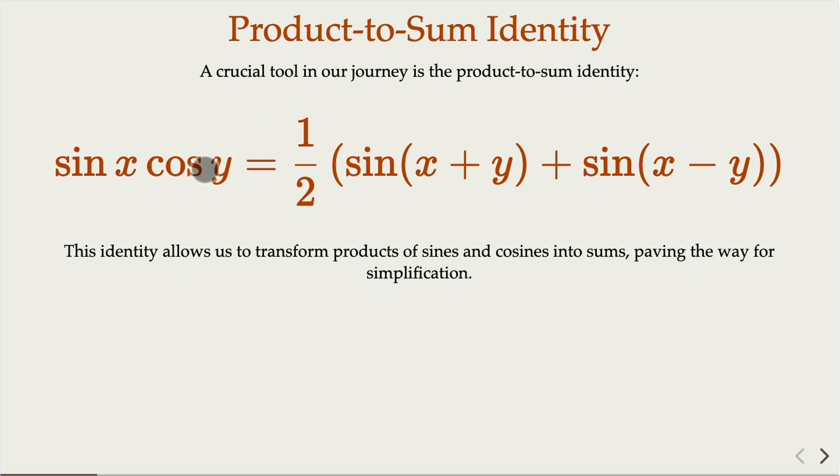One of the product to sum identity is sine x cosine y. We turn this product into the sum of sine x plus y and x minus y. There's a similar identity for sine x sine y, cosine x cosine y. We're going to use this identity to solve our problem.